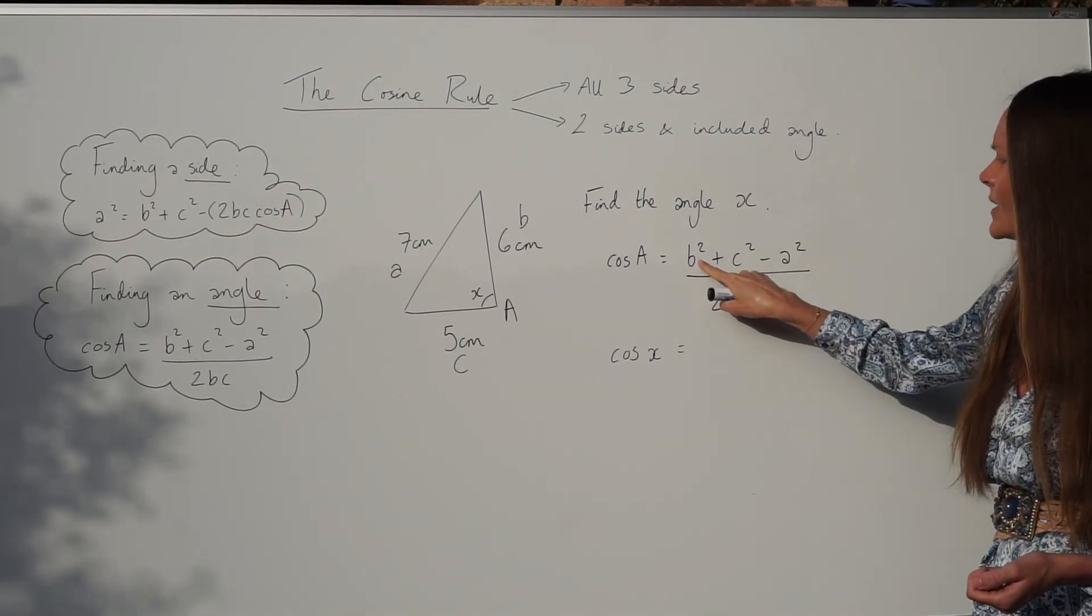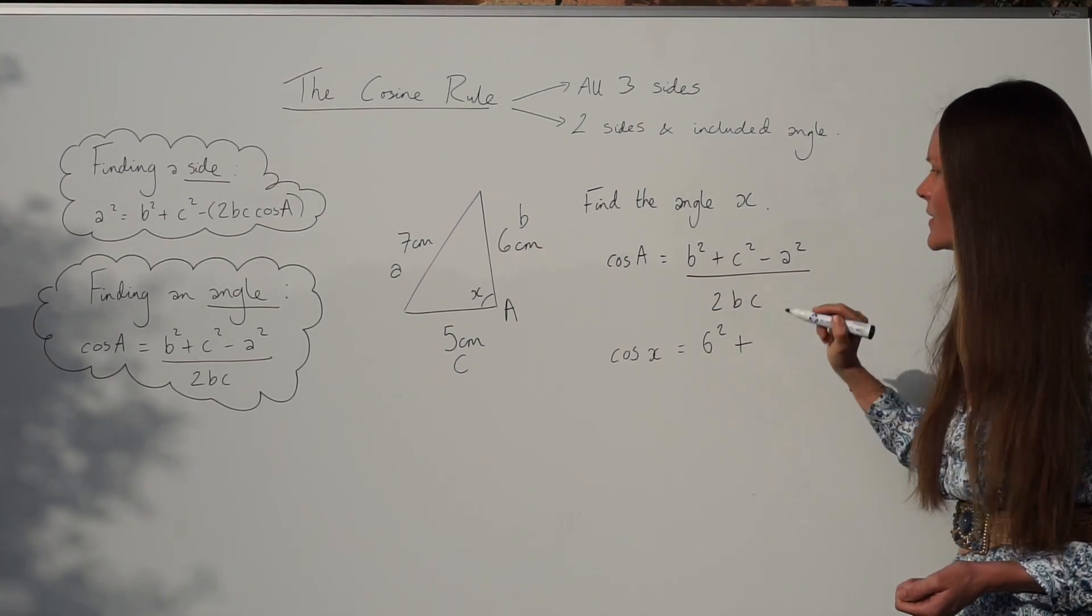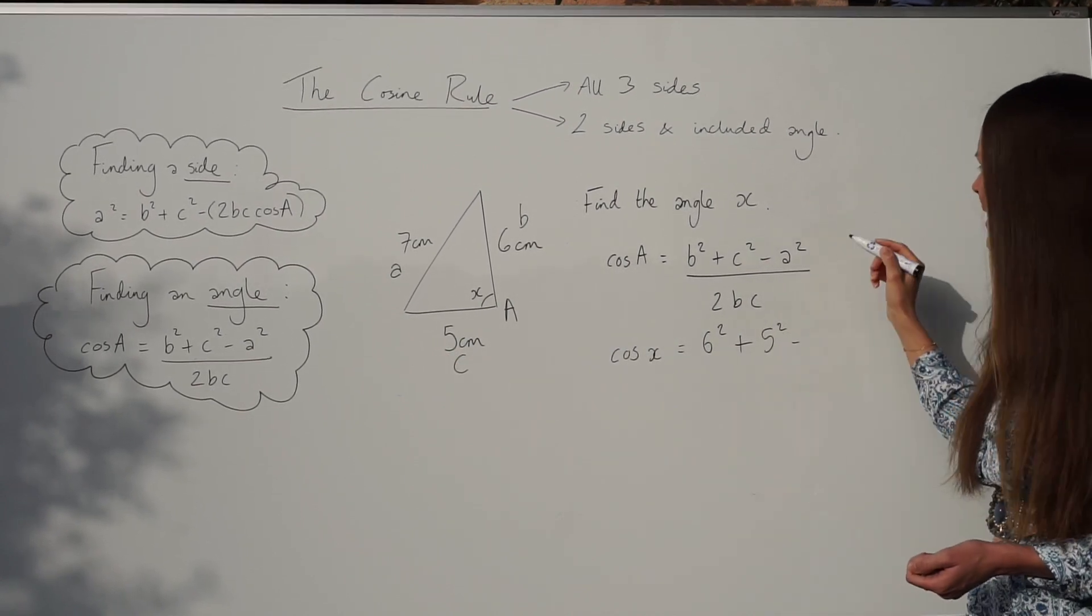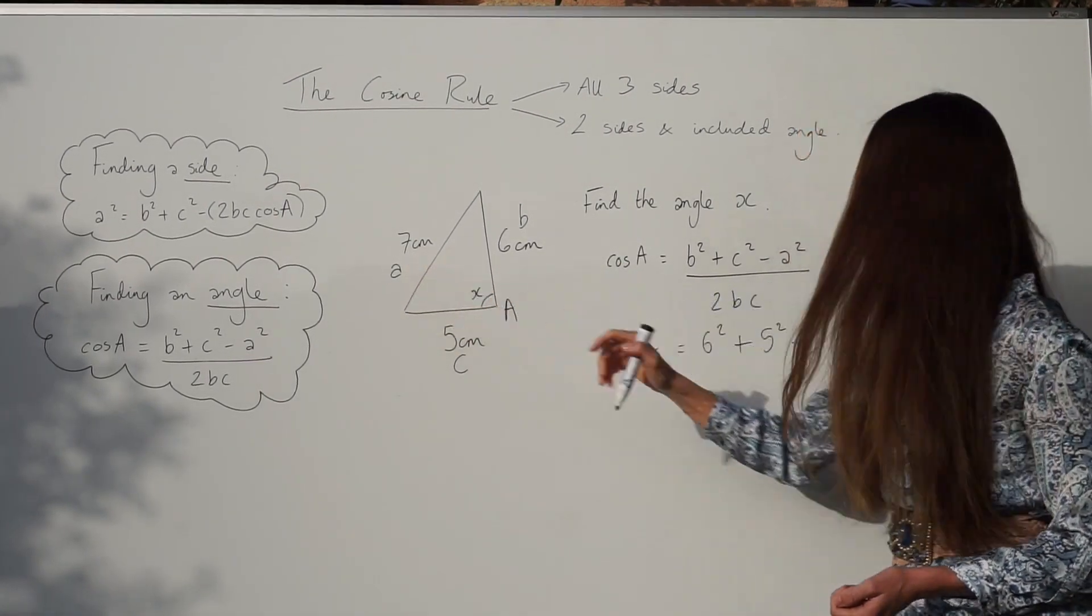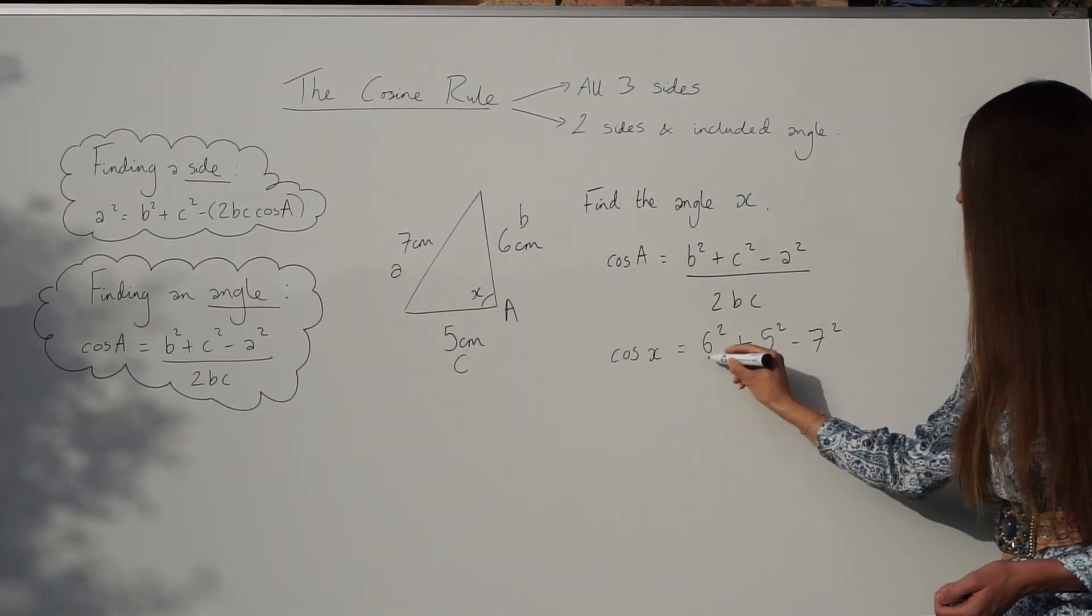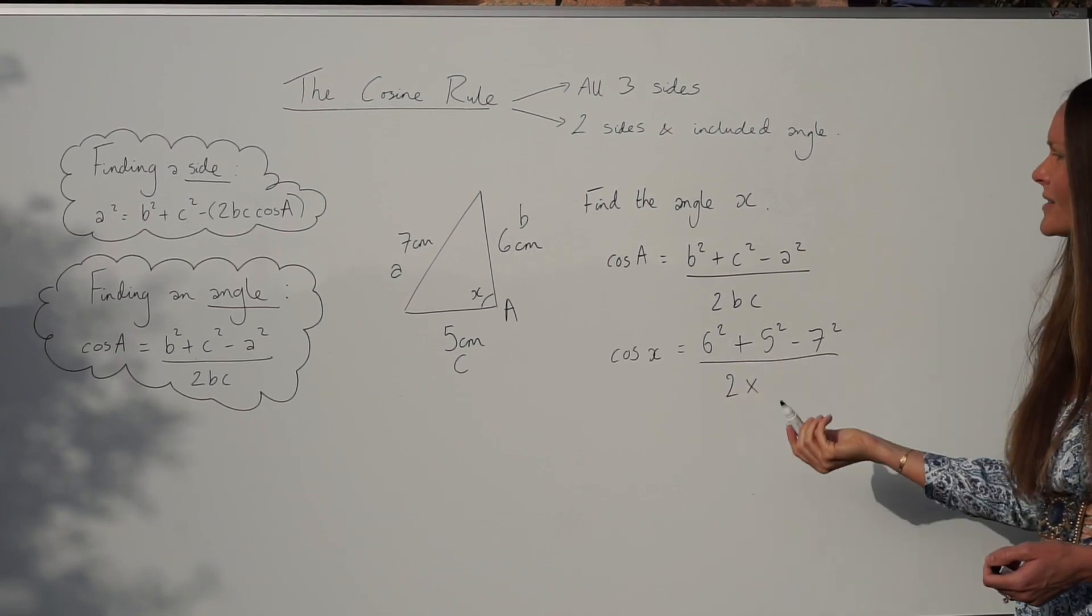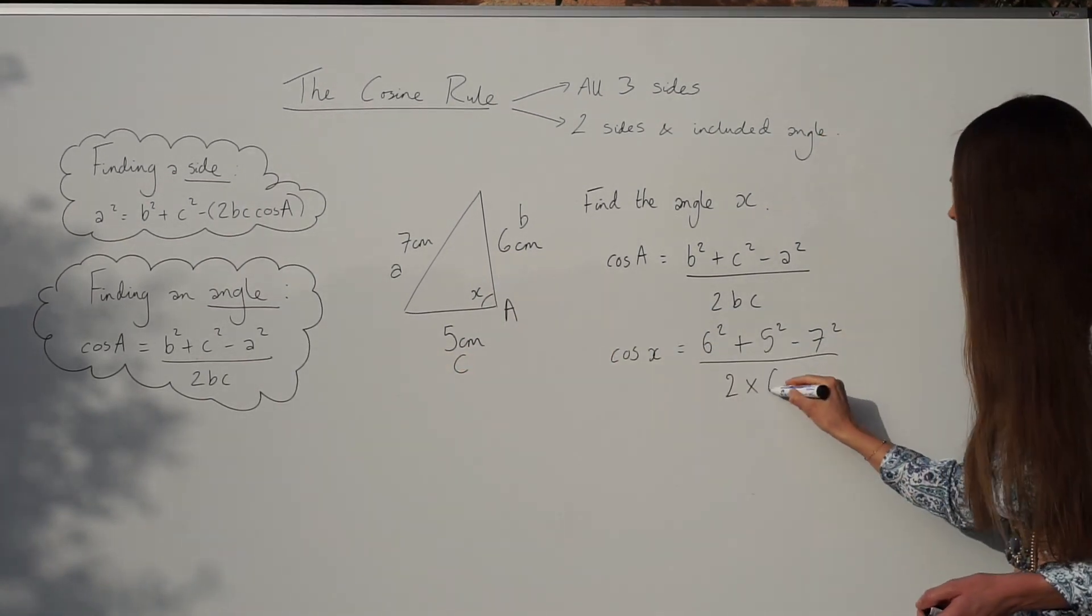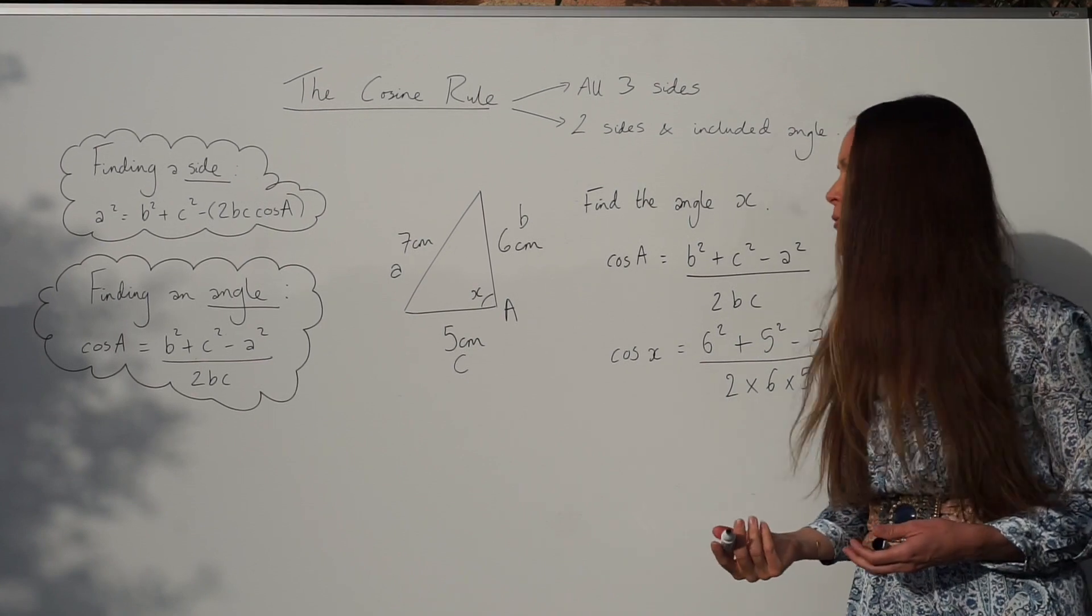But all of these we're going to change. So instead of little b² I'm going to write 6². Instead of c² we now have 5². And then we have to minus a². So minus 7². And all of that is divided by 2 multiplied by b multiplied by c. So 2 multiplied by 6 multiplied by 5. Okay, so you're literally just substituting in the numbers into the formula.